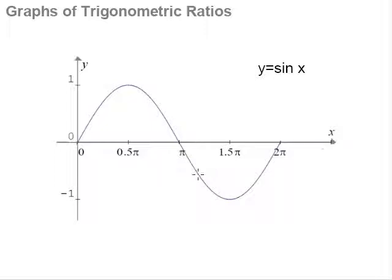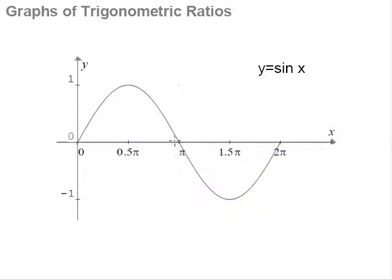We shall now spend a little time to talk about the graphs of the trigonometric ratios. In front of us is the curve of y equals sin x. When you plot the curve out, if you substitute x equals 0, you get sin 0, which is 0. When you substitute x equals pi over 2, you get 1. And if you substitute x as pi, you get 0, and so on. If you plot point by point, this is the shape you get. The more important question is: other than just sketching it by plotting point by point, why exactly does the sine curve look the way it does?